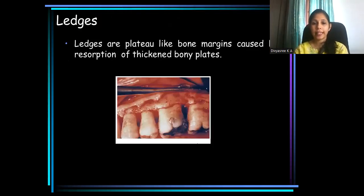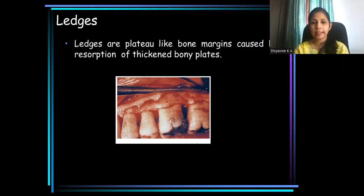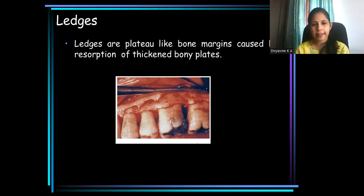Now we have ledges. Ledges are also very commonly seen in periodontal disease. They are plateau-like bony margins due to resorption of thick bony plates.